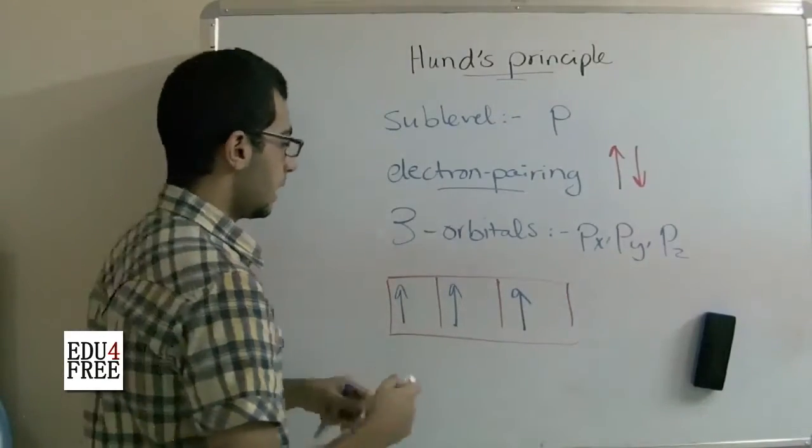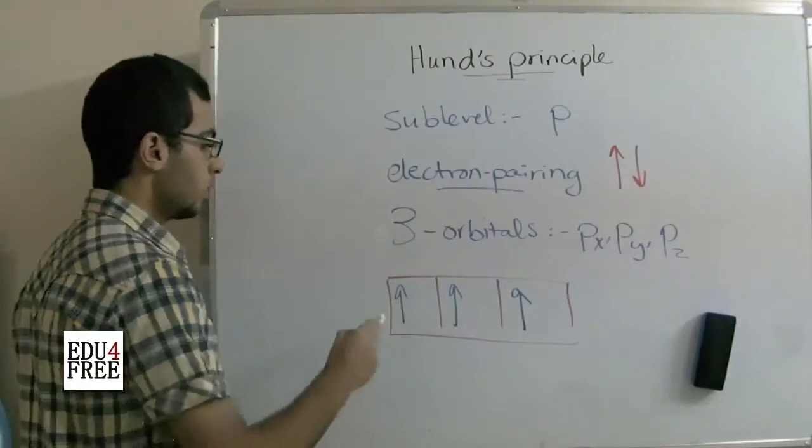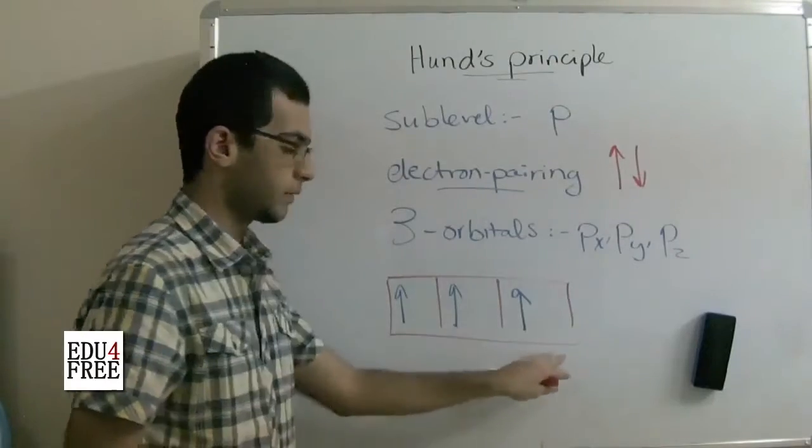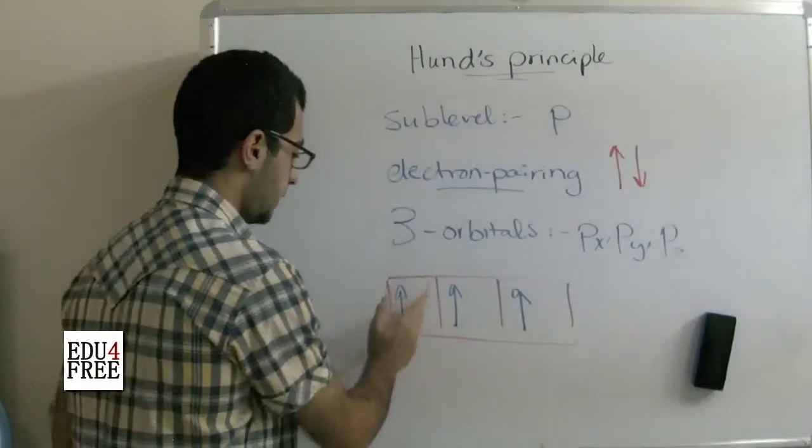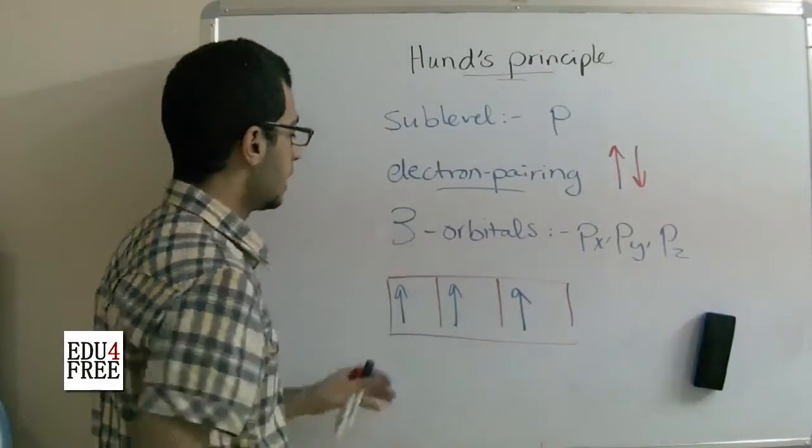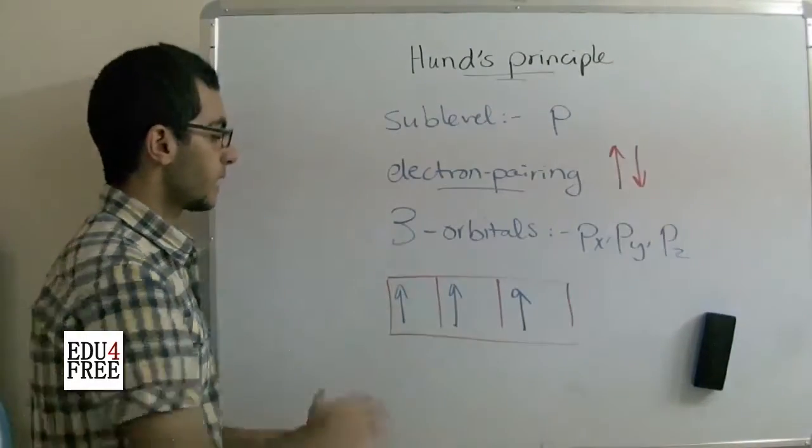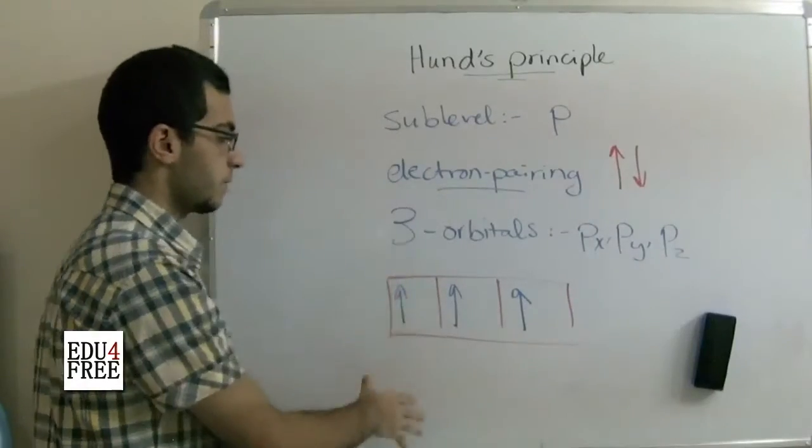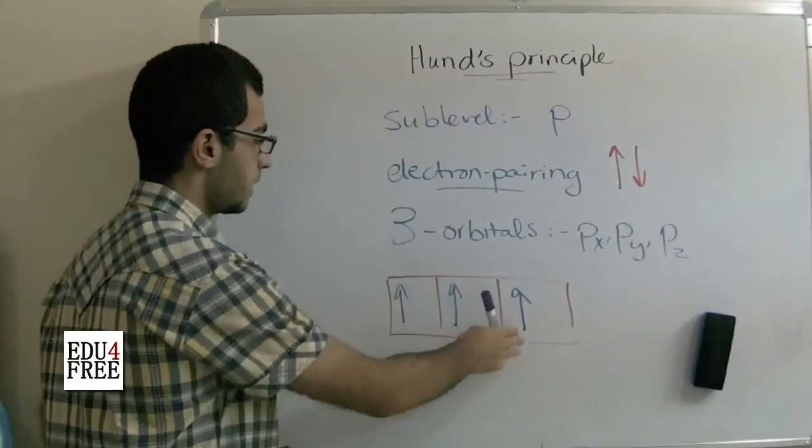And it's preferable also that all the electrons in the sub-level, if each one of them is found independently in each orbital, that all of them rotate in the same direction. So all of them rotate clockwise.